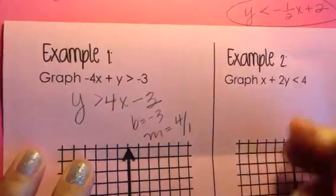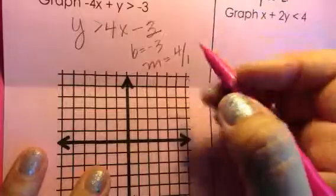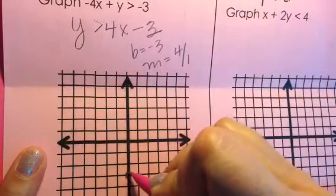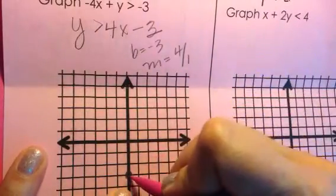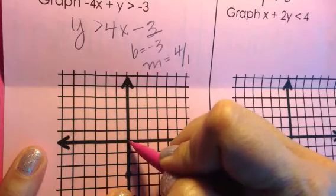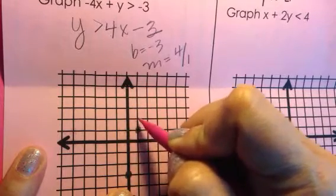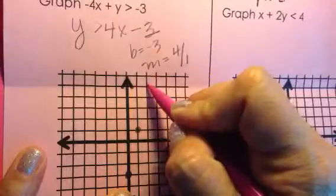We're going to write it as 4 over 1. On my graph, I'm going to start at negative 3 on the y-axis, and then I'm going to use a rise of 4 and a run of 1. 1, 2, 3, 4, to the right 1. 1, 2, 3, 4, to the right 1.